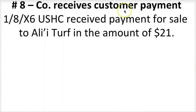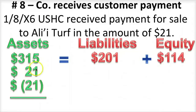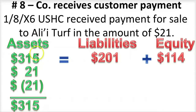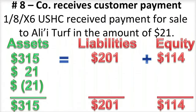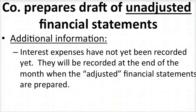On day eight, the company receives the customer payment from Ali'i Turf in the amount of $21. We received $21 in cash in exchange for the receivable — Ali'i Turf owed us $21, they paid in cash, and we forgive them the receivable. Total assets did not change and remain at $315. Since total assets didn't change, liabilities and equity also don't change. At this point, the company can prepare a draft of its unadjusted financial statements. We call it unadjusted because we haven't accounted for things like interest expense, which we'd record at month end for a more complete picture.